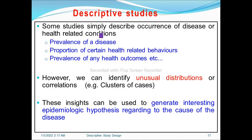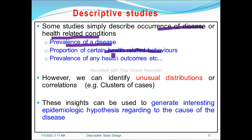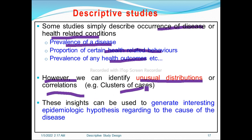Some descriptive studies simply describe the occurrence of disease or health-related conditions, like prevalence studies showing whether disease is present or not, or the proportion of certain health-related behaviors. For instance, cross-sectional studies are used for this. We can also identify unusual distributions or correlations using descriptive studies — such as clusters of cases — and these insights can be used to generate interesting epidemiological hypotheses regarding the cause of disease. Descriptive studies are important to generate hypotheses that are then tested by analytic studies.